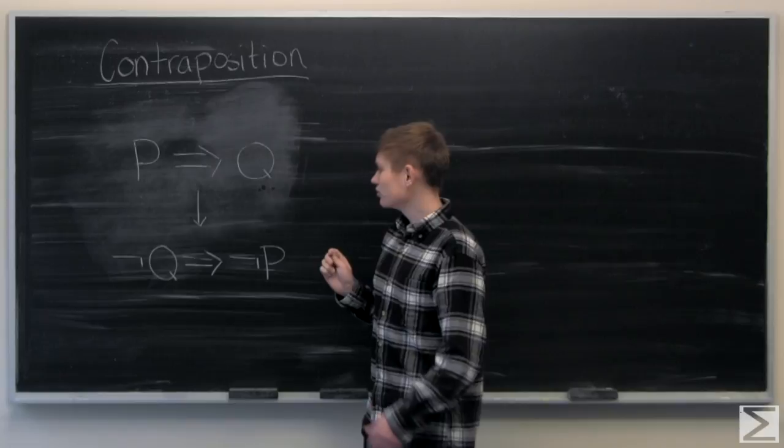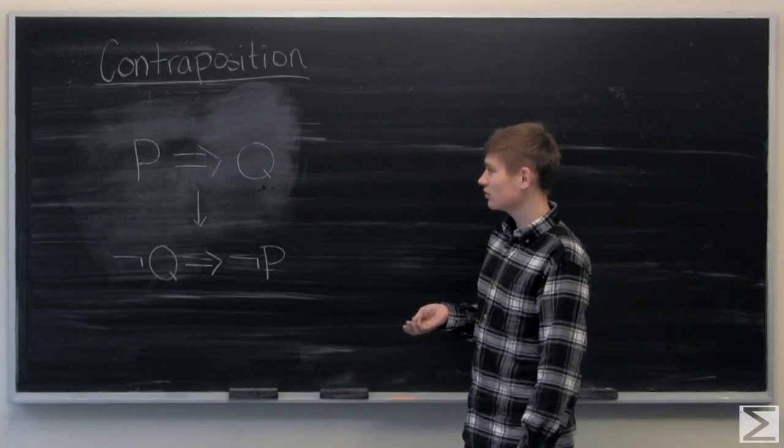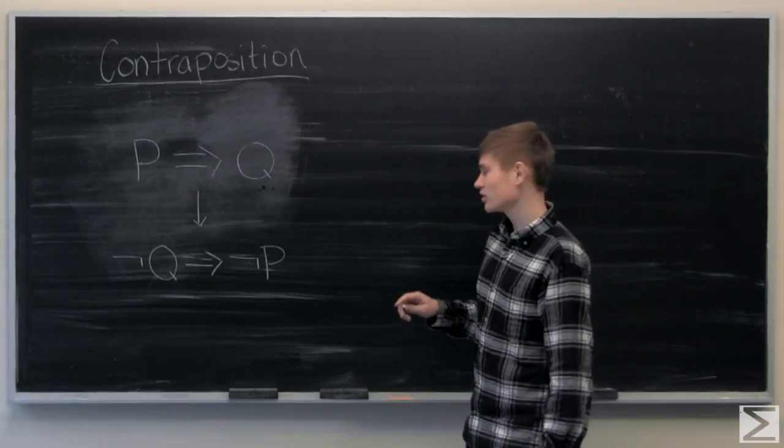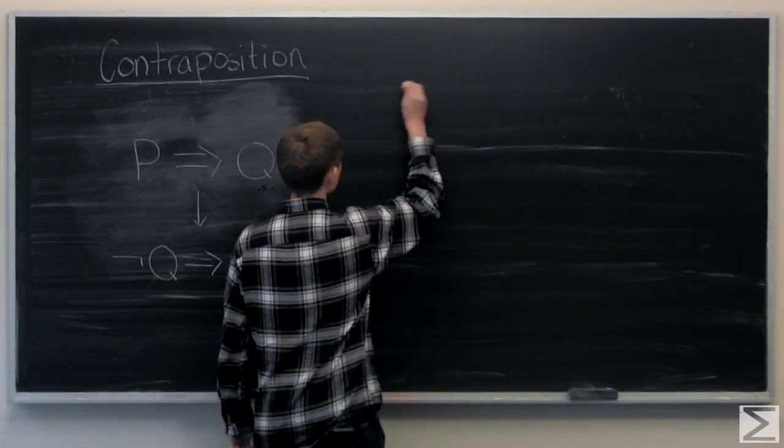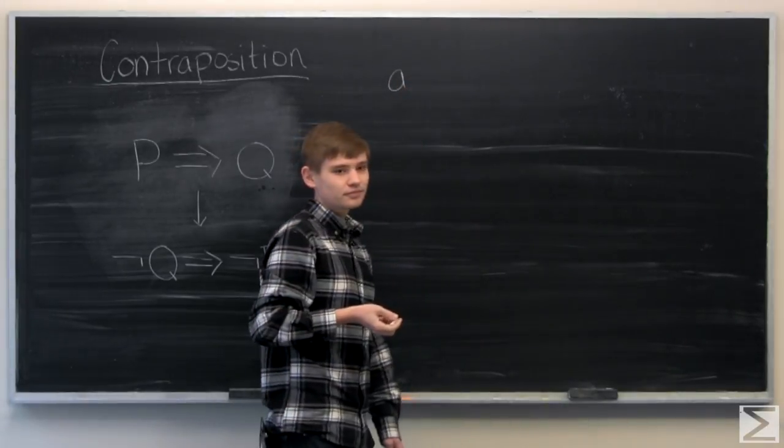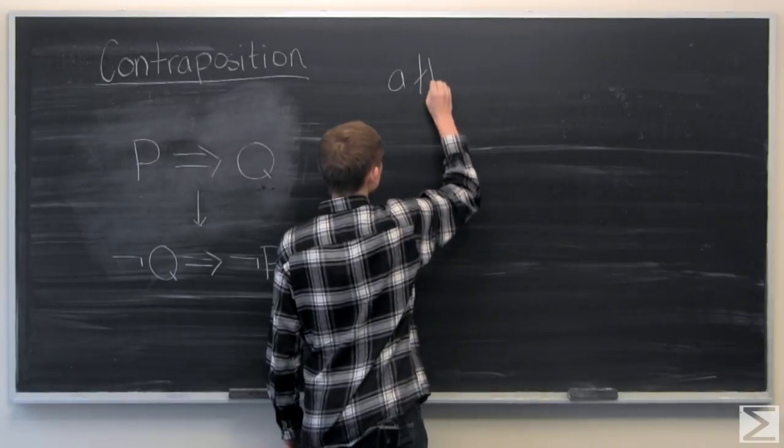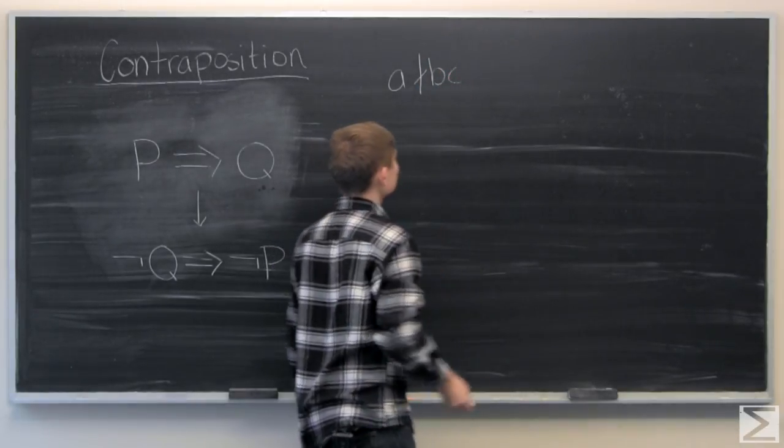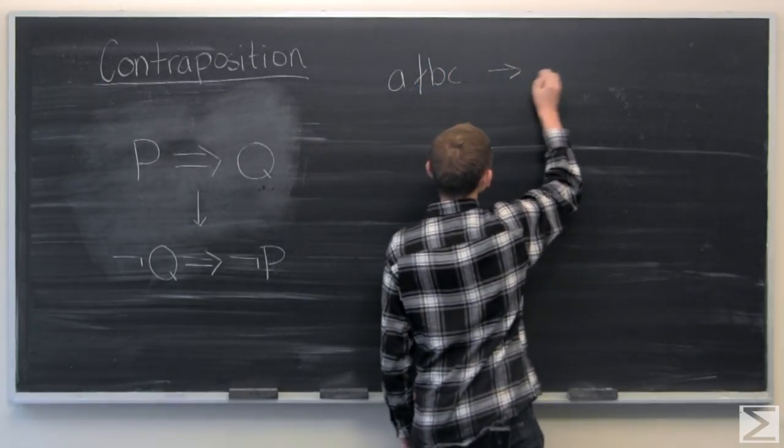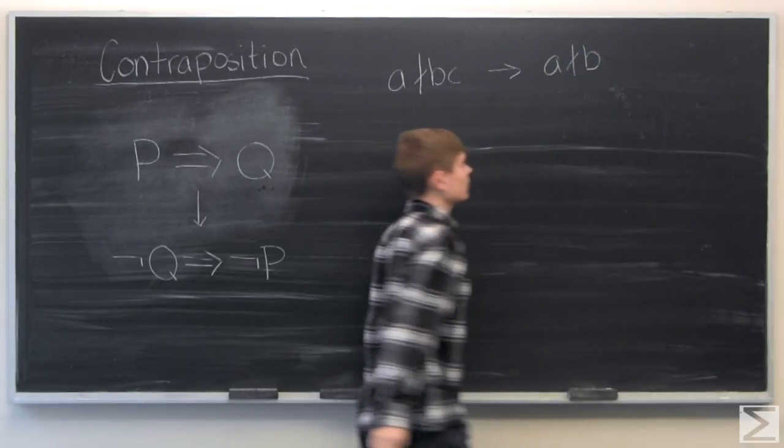So to start, we're going to do a proof that was done previously but do contraposition. And what we're going to show is that for natural numbers a, b, and c, if a does not divide bc, this means that a does not divide b.